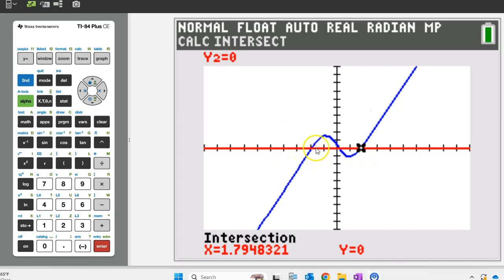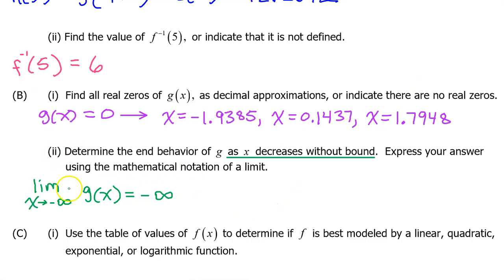Looking back at the graph of g of x, we see that as x approaches negative infinity, the value of g of x decreases without bound. It's falling, falling, falling. That's negative infinity. That's it for B part 2.